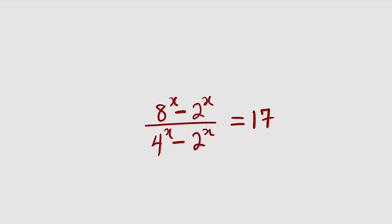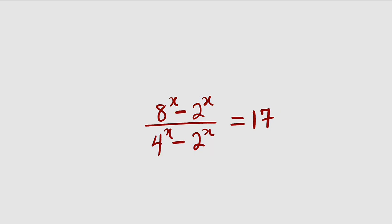Hello, good day viewers. In this tutorial, we are going to find a solution to this simple Olympiad Mathematics question. It is an exponential equation: 8 to the power of x minus 2 to the power of x, divided by 4 to the power of x minus 2 to the power of x, equal to 17. We are only looking for the real values of x.